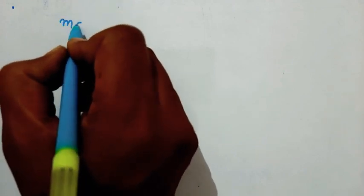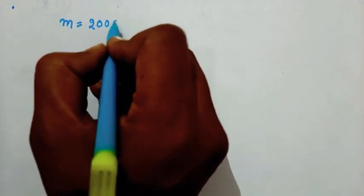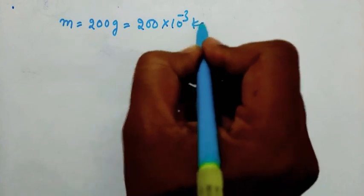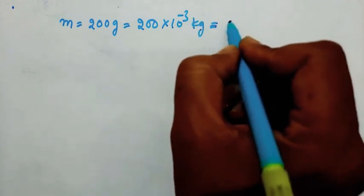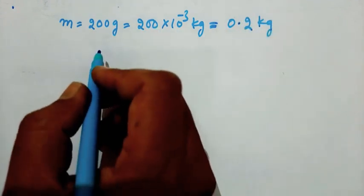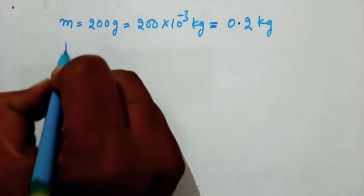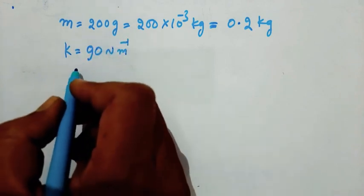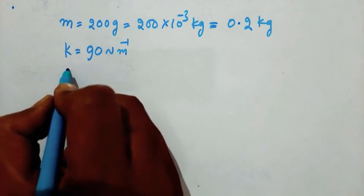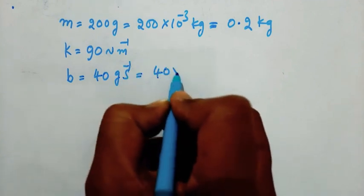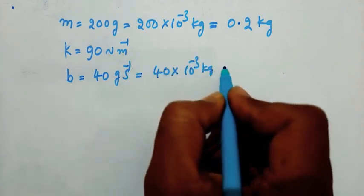The mass of the block is 200 grams, which converts to 200 into 10 to the power of minus 3 kilograms, that is 0.2 kilograms. Spring constant K is equal to 90 N per meter. And damping constant B is 40 grams per second, that is 40 into 10 to the power of minus 3 kilograms per second, which is 0.04 kg/s.